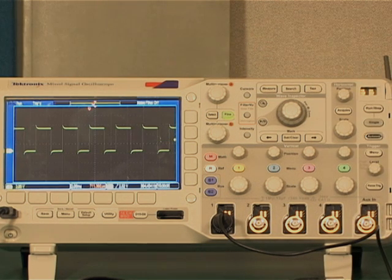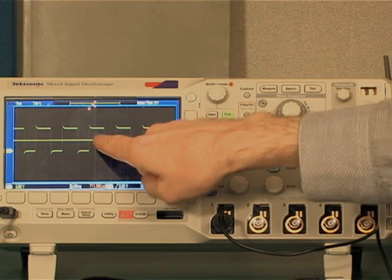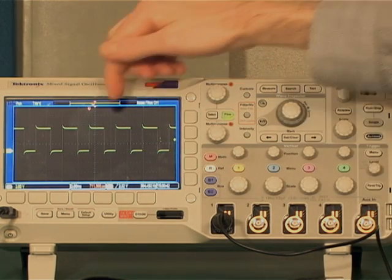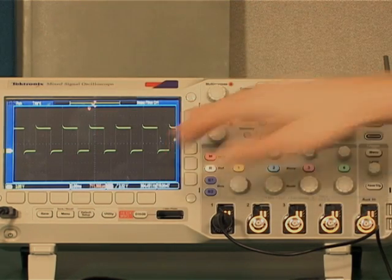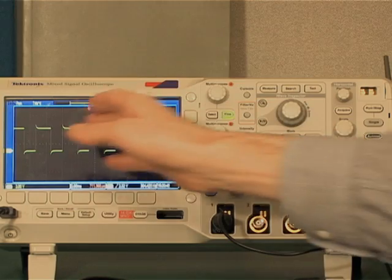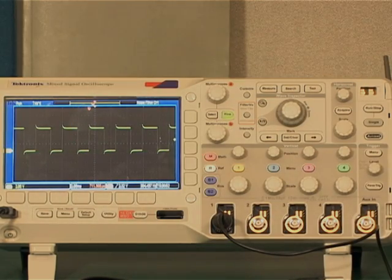So whenever it's time for the scope to update, it waits until the voltage crosses through this level and then it marks that point with the trigger indicator. It says this is the start of the signal and it updates. And notice it's also able to display a little extra data before the start of the signal. So how it does that is a discussion for another day.